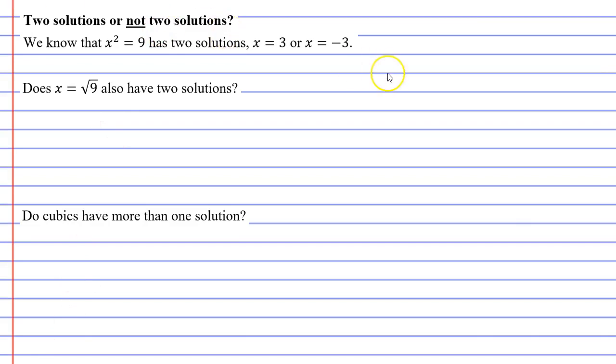Now, in previous videos, I've mentioned that the expression x squared equals 9 has two solutions. Either x will equal 3, or x can equal negative 3, and the reason for that is because 3 times 3 is 9, and negative 3 times negative 3 is also 9, because two negatives make a positive.